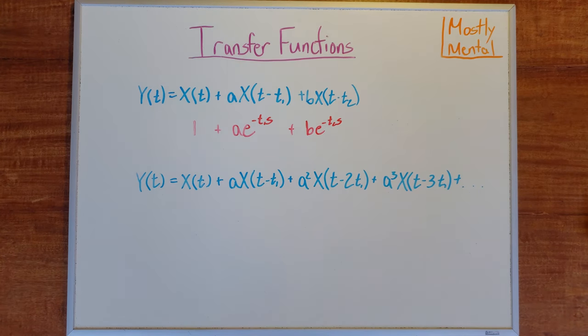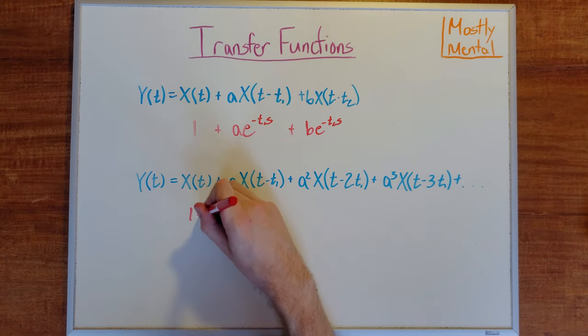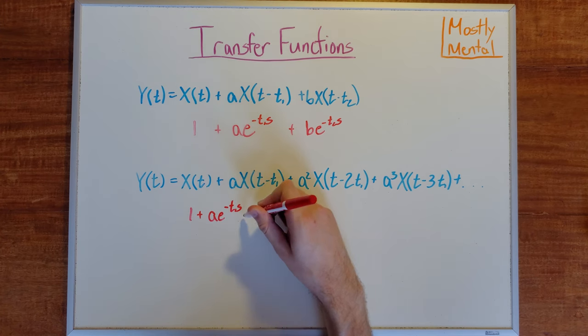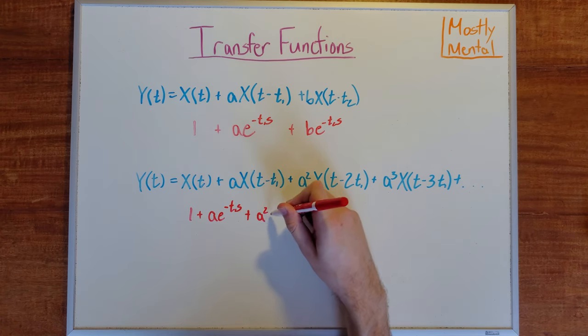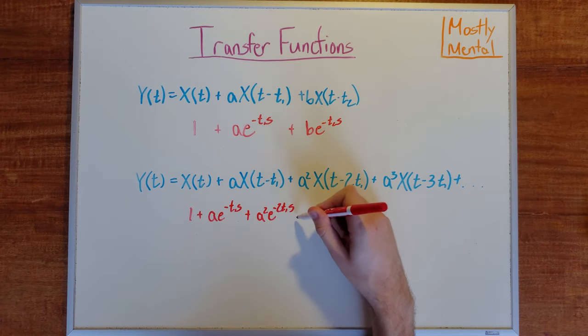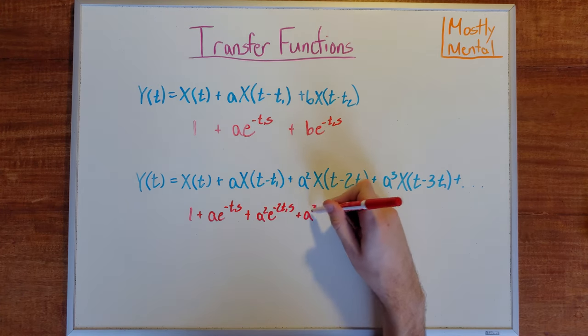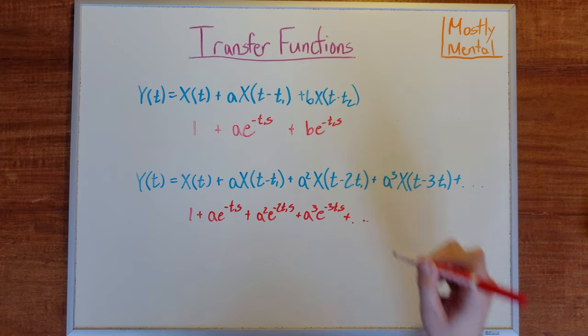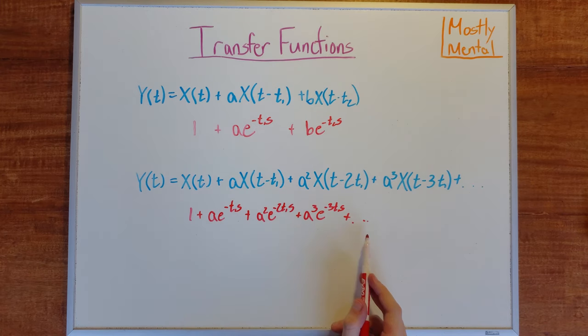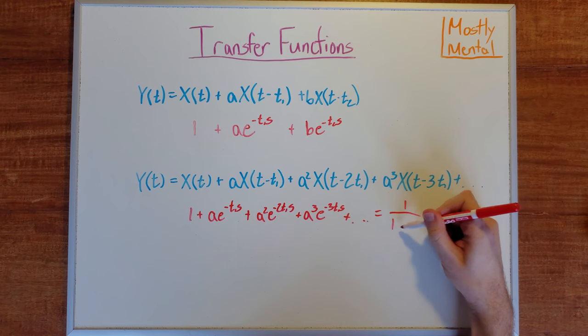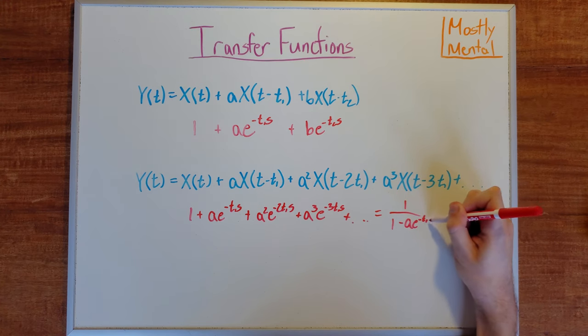And that gives us a transfer function of 1 plus ae to the negative t1s, plus a squared e to the negative 2t1s, plus a cubed e to the negative 3t1s, and so on. And this is a geometric series, so it simplifies to 1 over 1 minus ae to the negative t1s.